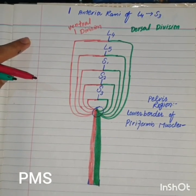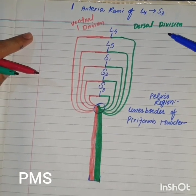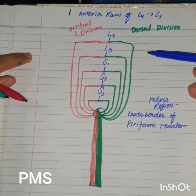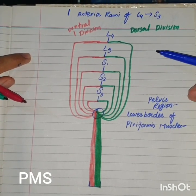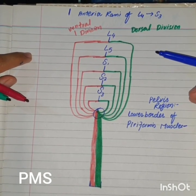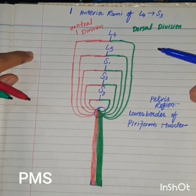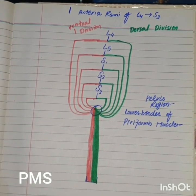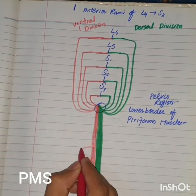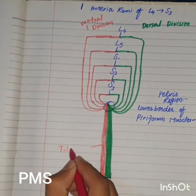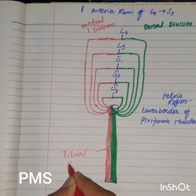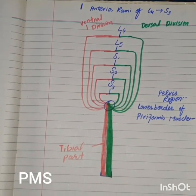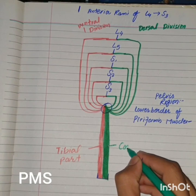The sciatic nerve is formed by fibers from both the ventral and dorsal divisions, so it has two parts: one is known as the tibial part of the sciatic nerve, and the second one is known as the common peroneal part. The part formed from the ventral division is the tibial part, and the part formed from the dorsal division is the common peroneal part.